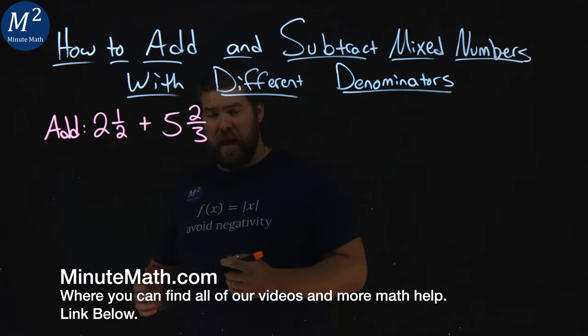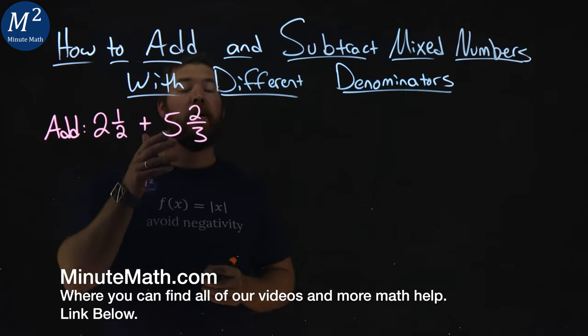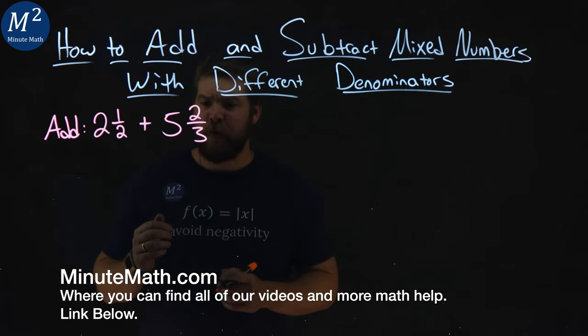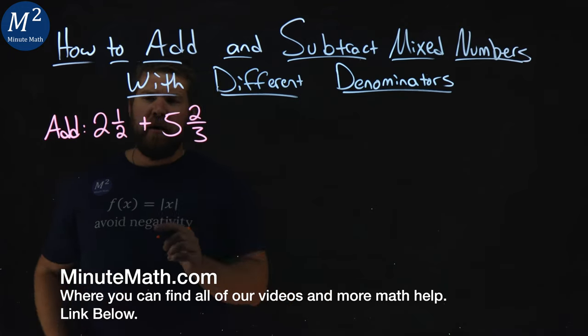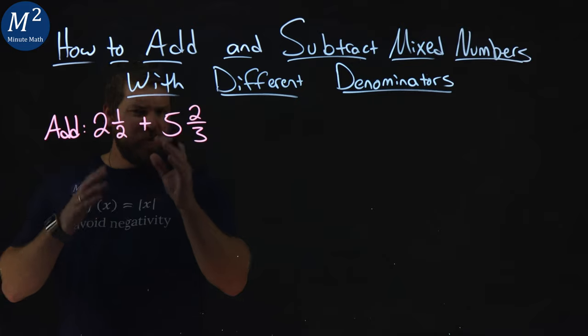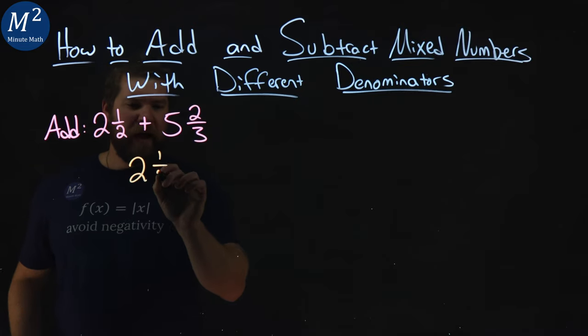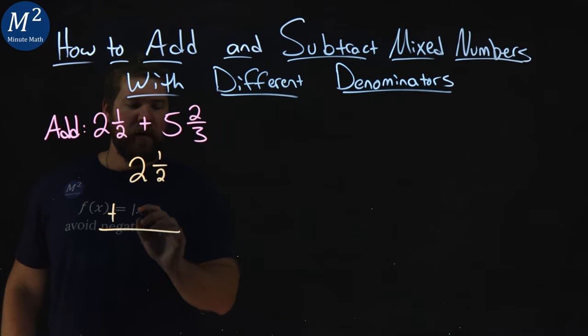We're given this problem right here: 2 1/2 plus 5 2/3. We got some mixed numbers and different denominators. So let's write it vertically, 2 1/2 plus 5 2/3.